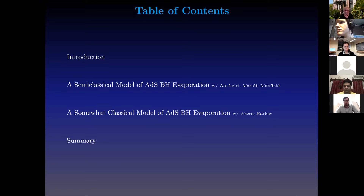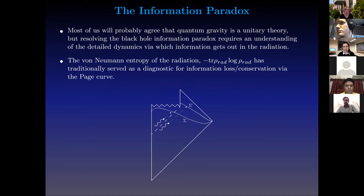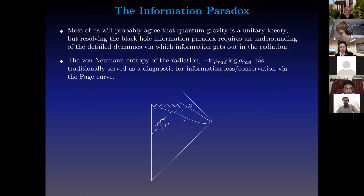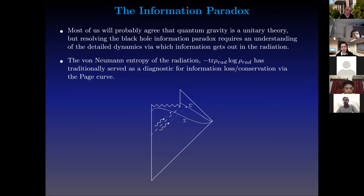Let me begin with some introduction. Most of us will agree the information paradox is interesting, and most of us will probably also agree that quantum gravity is a unitary theory. But actually resolving the information paradox amounts to more than just physicists deciding by popular mandate that quantum gravity had better be unitary. Resolving the information paradox really requires us to have a very detailed understanding of the dynamics of the state, and in particular, the way in which information gets out.